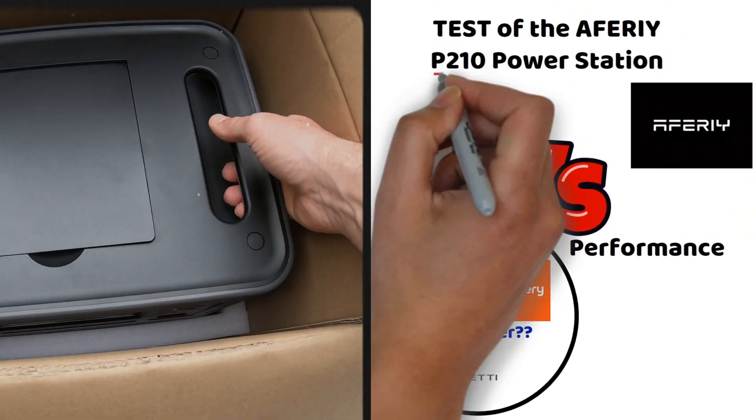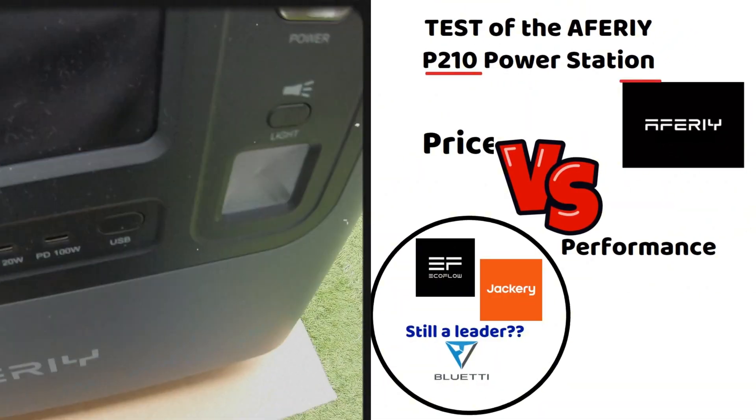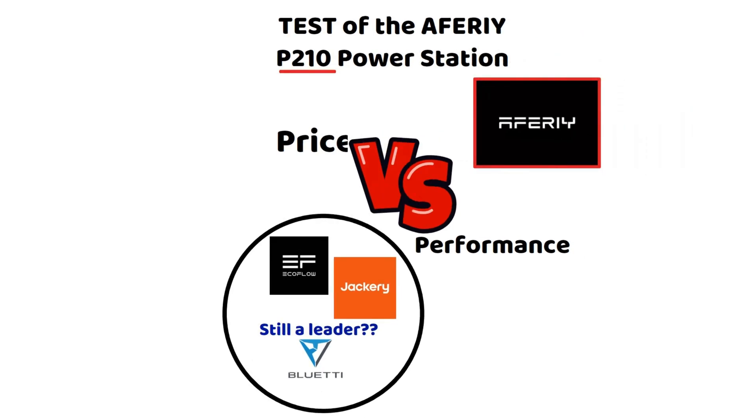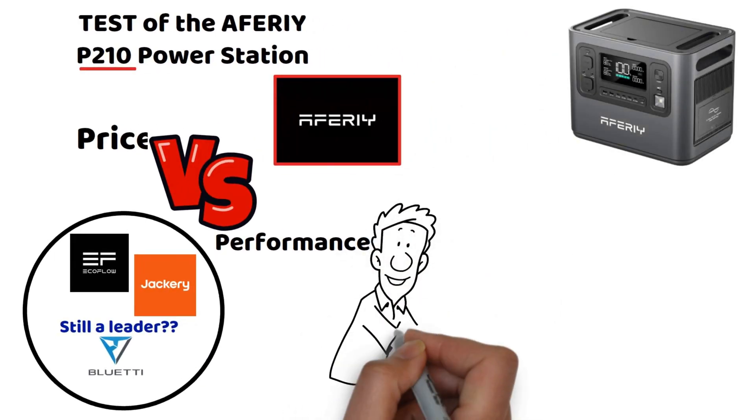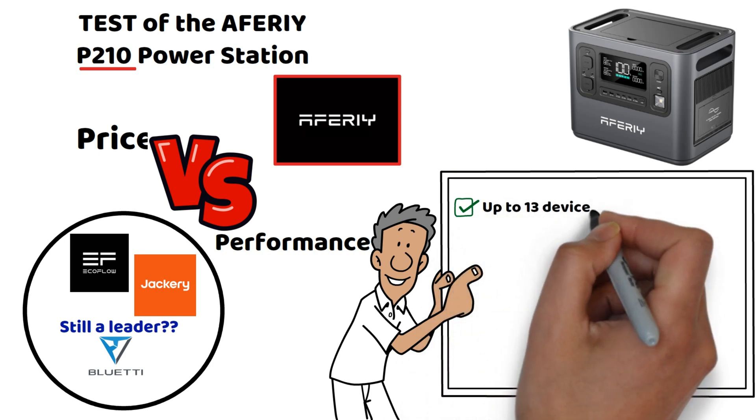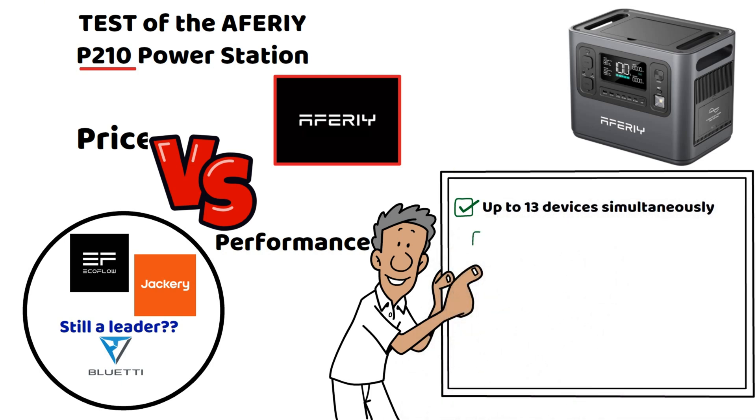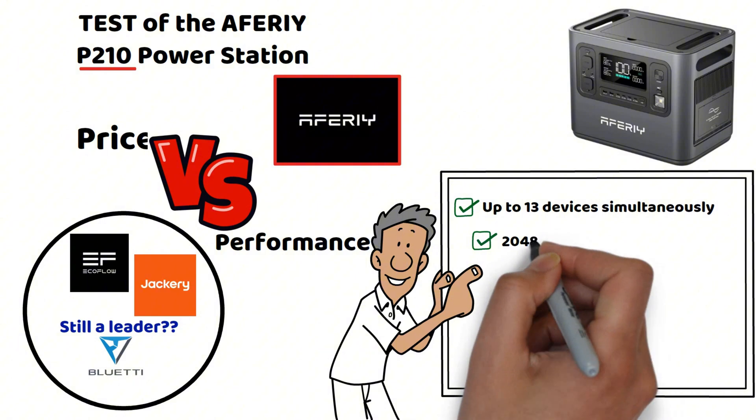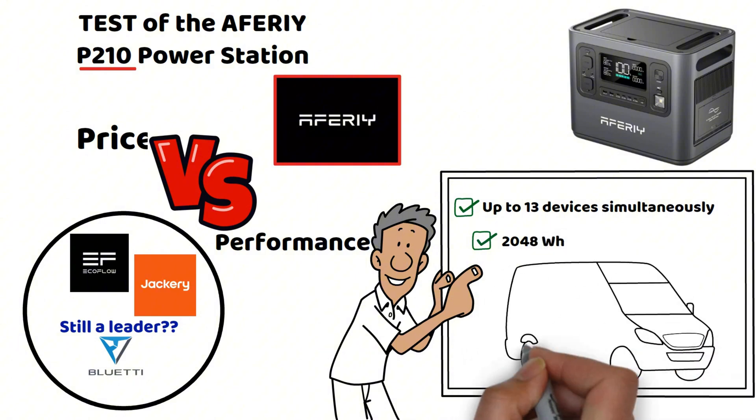You'll see that the Aferiy P210 model can really be used in many different areas. Among other things, it can power up to 13 devices simultaneously, ensuring maximum flexibility. And as you'll see in this video, it can greatly simplify the setup of your electrical system in a camper van or camper van conversion.